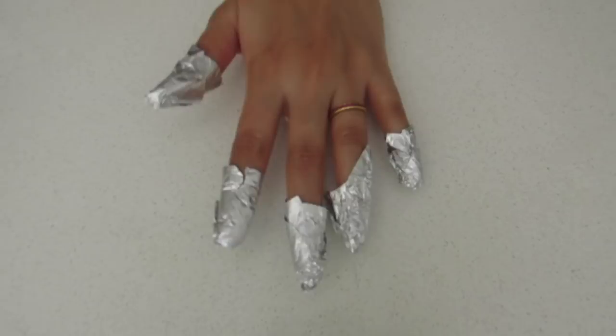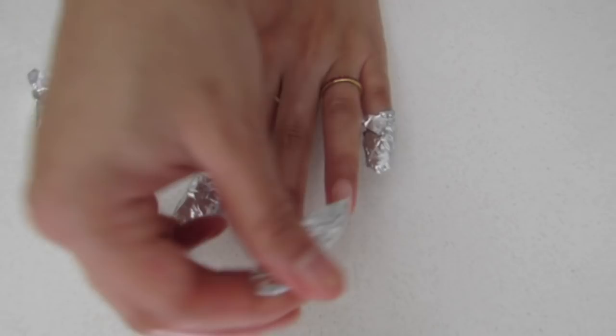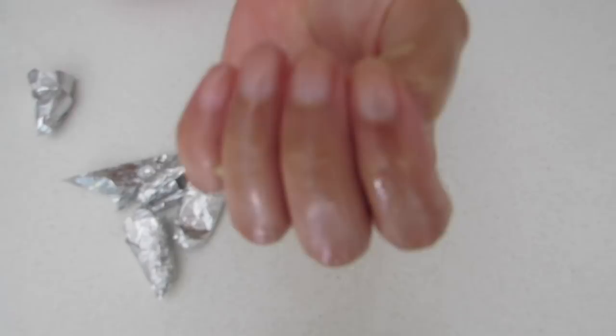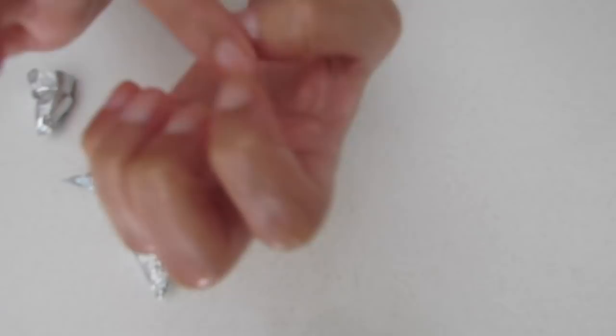So after 30 minutes, just unwrap the aluminum foils and you can just wash it off with mild soap. Please make sure that you are using mild soap. Do this procedure every day for 10 to 15 days to see the maximum results.